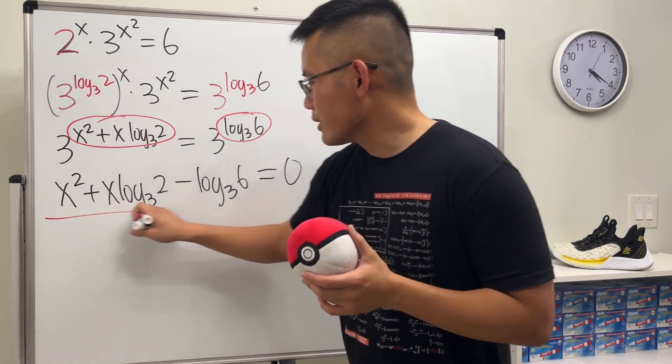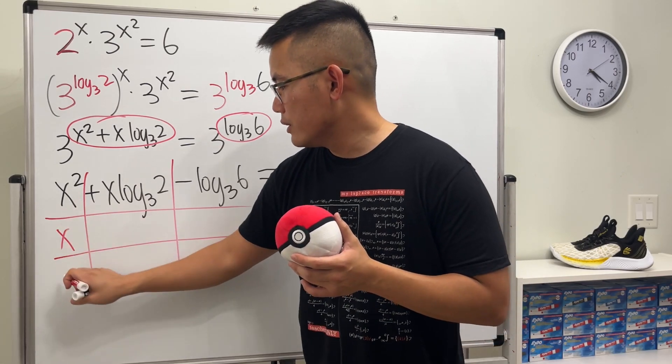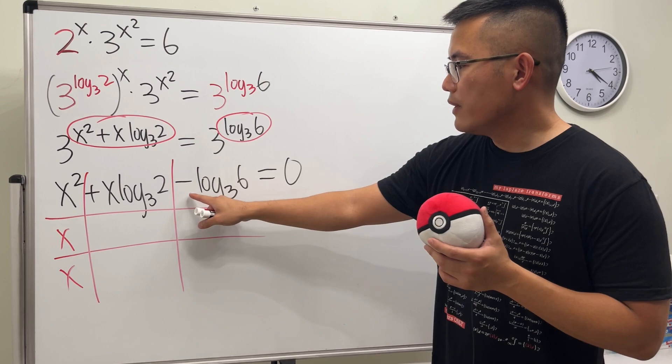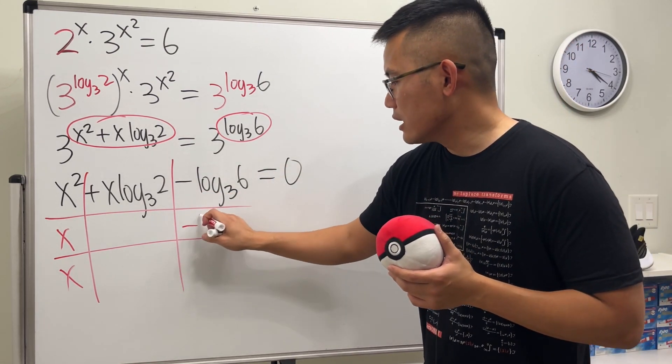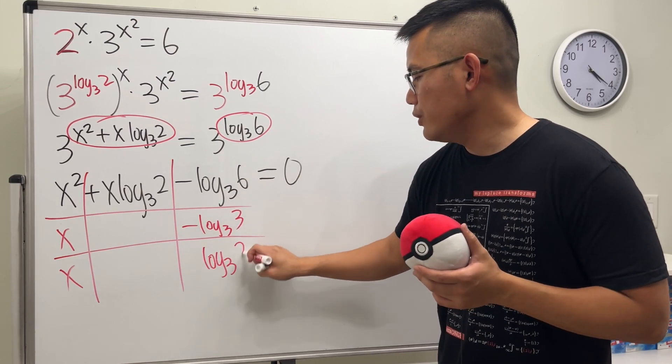Let's see how we can factor it. I will draw the tic-tac-toe boxes for you guys like this. Alright, 1 times 4 give us x squared, that's just x times x, no big deal. Now 1 times 4 give us negative log base 3 of 2. Easy right? It's just negative log base 3 of 3 times log base 3 of 2.